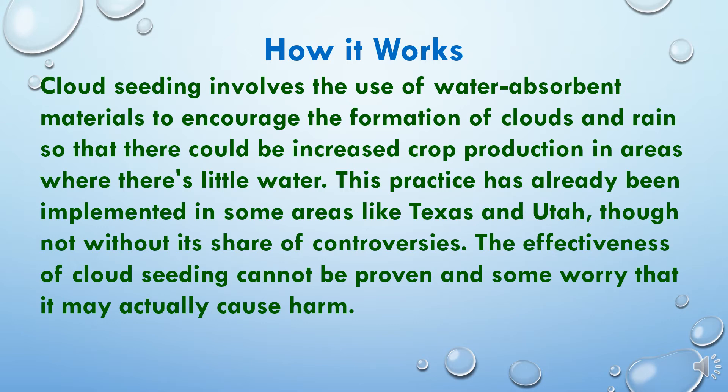Cloud seeding involves the use of water-absorbent materials to encourage the formation of clouds and rain, so that there could be increased crop production in areas where there is little water. This practice has already been implemented in some areas like Texas and Utah. Though not without its share of controversies, the effectiveness of cloud seeding cannot be fully proven, and some worry that it may actually cause harm.